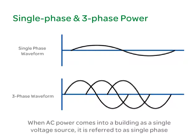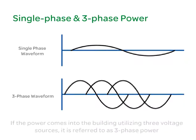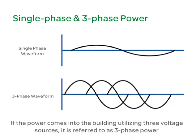When AC power comes into a building as a single voltage source, it is referred to as single phase. If the power comes into the building utilizing three voltage sources, or three phases, or three hot wires with accompanying neutrals and grounds, it is referred to as three phase power.